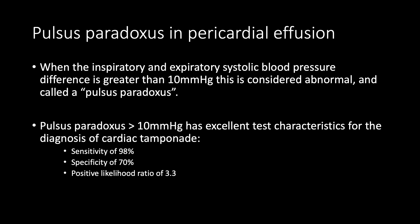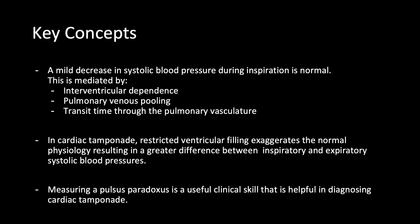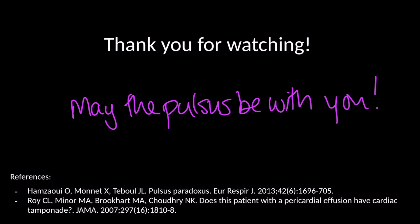Deflate the cuff further, listening for continuous sounds throughout the respiratory cycle. You can hear this at a pressure of 96 millimeters of mercury. For our participant, the difference between these two pressures is 6 millimeters of mercury. When the difference is greater than 10 millimeters of mercury, this is considered abnormal and called a pulsus paradoxus. A pulsus measured greater than 10 millimeters of mercury has excellent test characteristics for the diagnosis of cardiac tamponade in the setting of a pericardial effusion, with a sensitivity of 98%, a specificity of 70%, and a positive likelihood ratio of 3.3. In cardiac tamponade, restricted ventricular filling exaggerates the normal physiology, resulting in a greater difference between inspiratory and expiratory systolic blood pressures. Measuring a pulsus paradoxus is a useful clinical skill that may be helpful in diagnosing cardiac tamponade. The patient's pulsus is 15 — better go call cardiology. Thanks for watching.